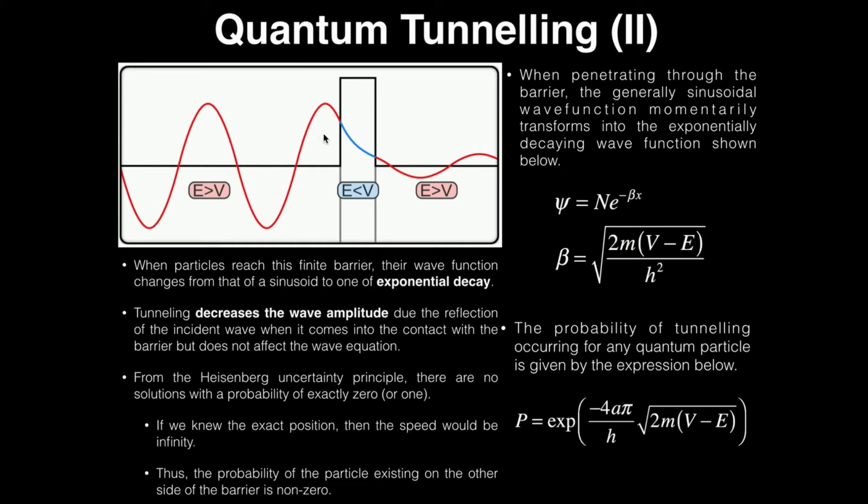So there has to be, particularly if this barrier is thin, there has to be some probability it's over on the right side as well because you can't say that it's not over here. It's impossible. It has to be maybe to some extent over here. And so because we can never say the exact position and there has to be some probability it's over here, the electron can potentially tunnel over to the other side.